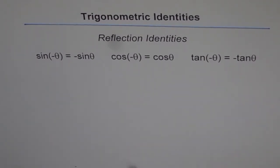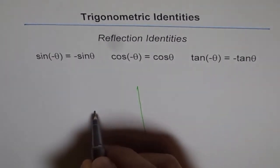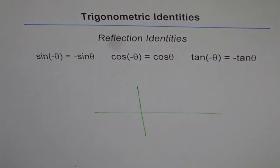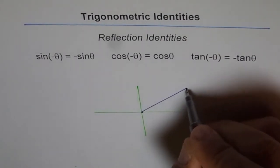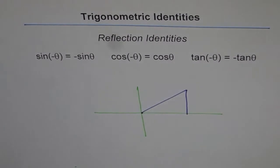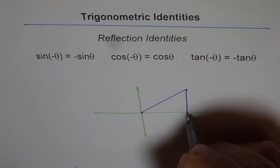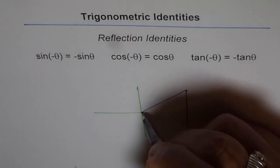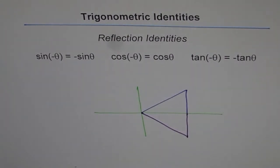I will provide you with a simple proof. I will make a coordinate system with two triangles — one in quadrant 1 and the other in quadrant 4, which is just a reflection of the same triangle at the same distance from the origin.